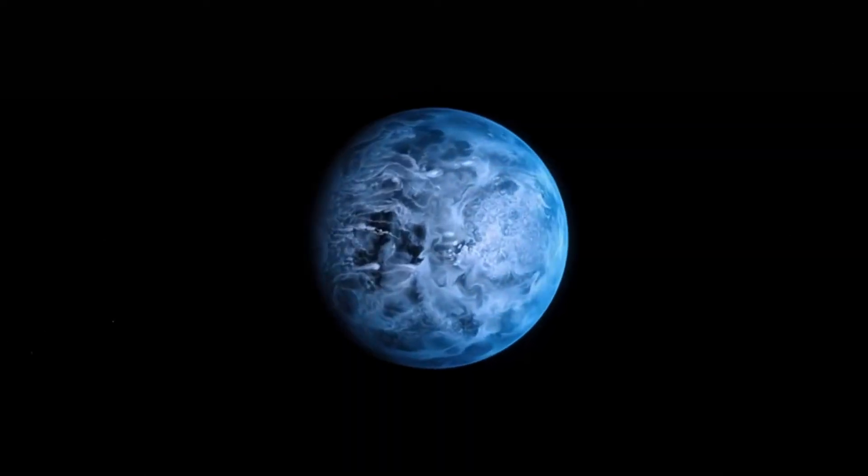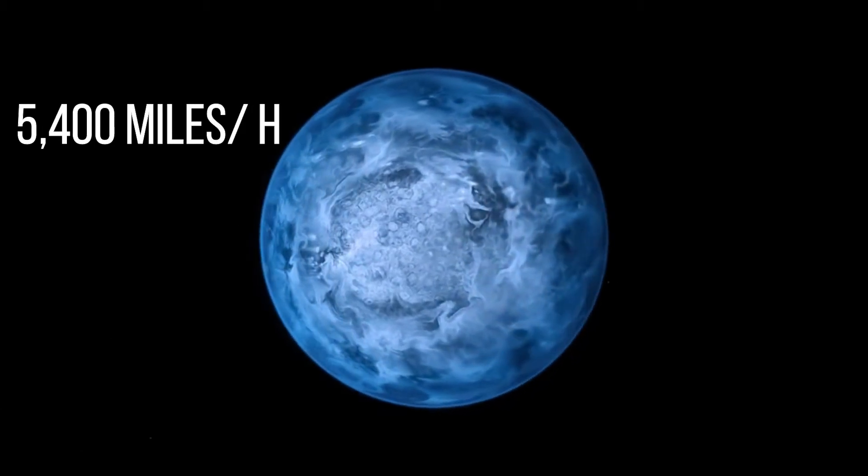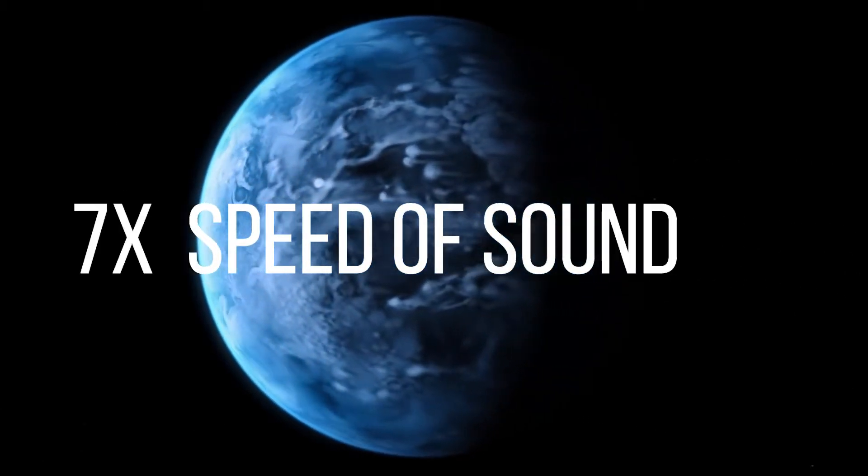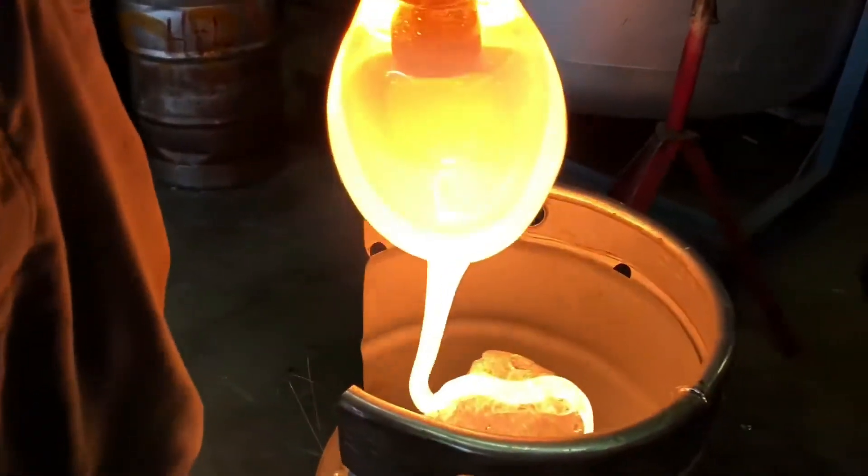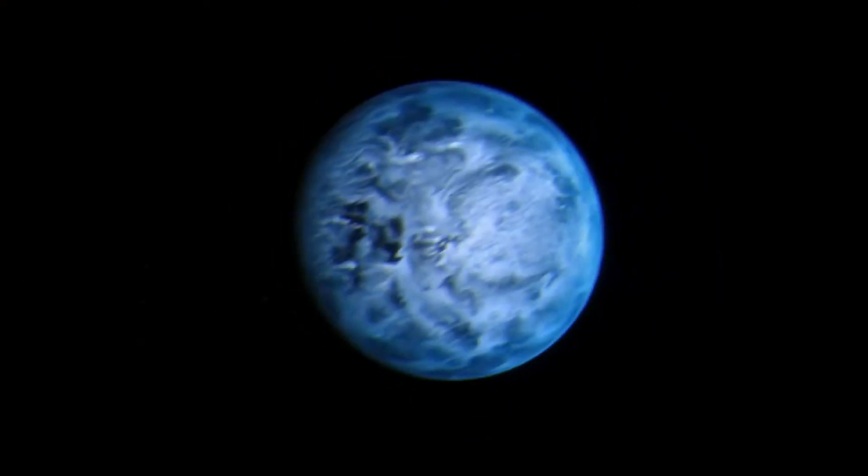The amazing and frightening thing about this planet is its weather. Wind speeds can actually reach as high as 5,400 miles per hour, over seven times faster than the speed of sound. Rain on this planet is more than an inconvenience.